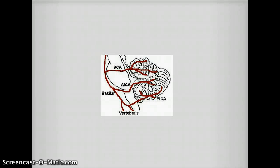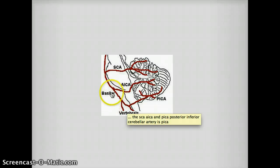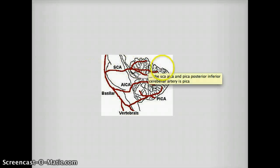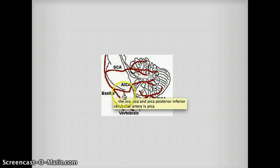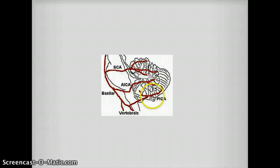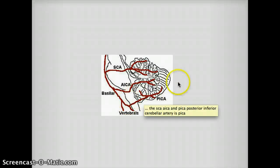The next picture is a view of the basilar artery passing on top of the pons. This bubble area is the pons. This is the superior cerebellar artery going to the superior cerebellum. This is AICA, or anterior inferior cerebellar artery, running like that. And that is PICA, the posterior inferior cerebellar artery, which is also responsible for lateral medullary syndrome.